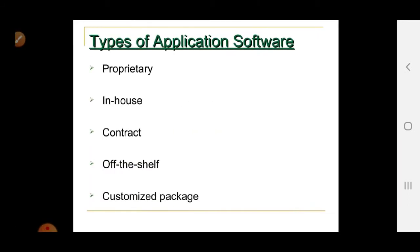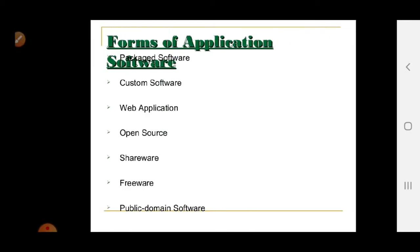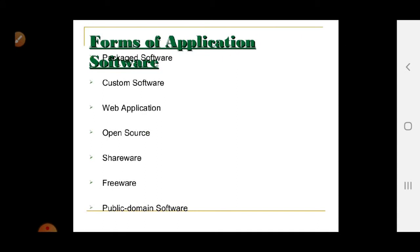Types of application software include: proprietary, in-house, contract, and off-the-shelf or customized package software. Forms of application software include: package software, custom software, web applications, open source, shareware, freeware, and public domain software.